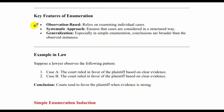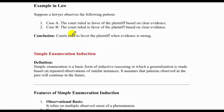Key features of enumeration: First, it is observation-based — it relies on examining individual cases. Second, it is a systematic approach, ensuring cases are considered in a structured way. Third, generalization — especially in simple enumeration, conclusions are broader than the observed instances. As an example in law: suppose a lawyer observes that in Case A the court ruled in favor of the plaintiff based on clear evidence, and in Case B also the court ruled in favor of the plaintiff based on clear evidence. Therefore, an inductive conclusion is drawn: courts tend to favor the plaintiff when evidence is strong.